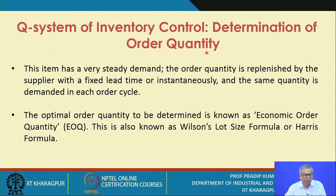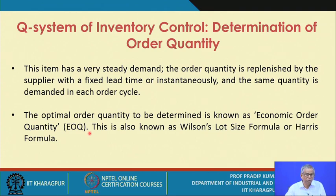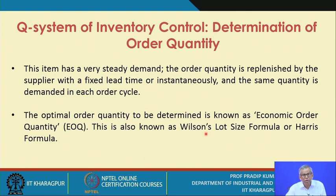Let us determine the order quantity for the Q system of inventory control. This item has a very steady demand; the order quantity is replenished by the supplier with a fixed lead time or instantaneously, and the same quantity is demanded in each order cycle. The optimal order quantity to be determined is known as the economic order quantity or EOQ — also known as the Wilson lot size formula, first introduced by Wilson in 1913, and also referred to as the Harris formula, as Harris extensively used this EOQ model.